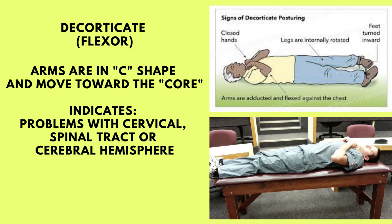One example of posturing is decorticate, or flexor posturing. In decorticate posturing, the arms are in a C shape and all extremities move towards the core. The patient has closed hands, the legs are turned inward, and the feet are also turned inward. Try and remember decorticate — core. A patient who has decorticate posturing will usually suffer problems with the cervical spinal tract or cerebral hemisphere.